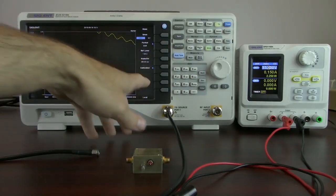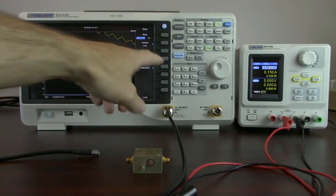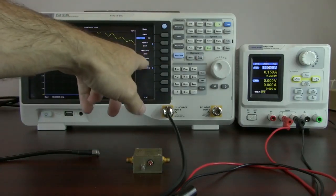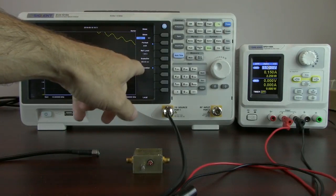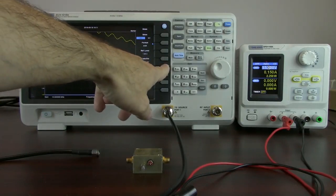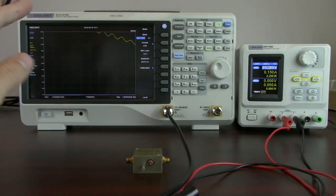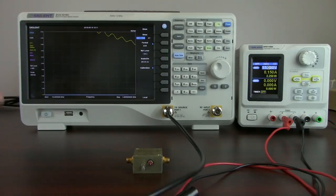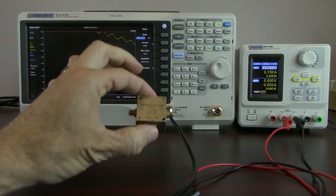We've already set our scale and things previously. You can adjust the reference level as well as the scale per division. And now I'm going to perform a calibration. This is going to remove the effects of the cabling so we're only going to measure the device under test.